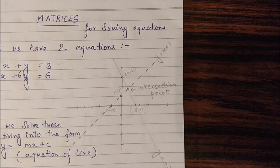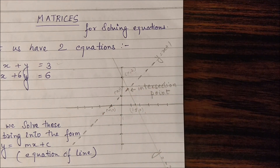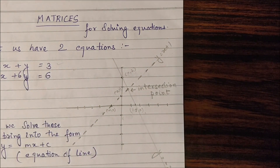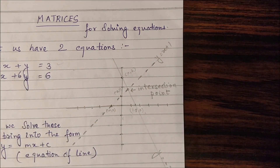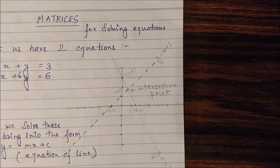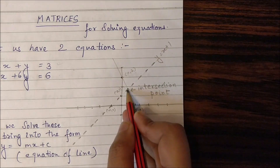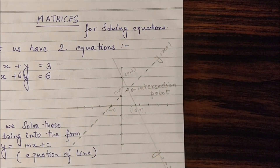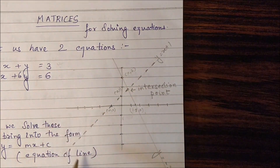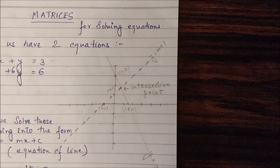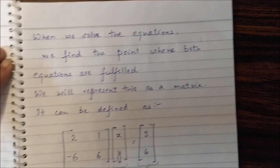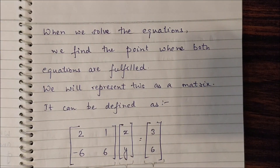When solving with matrices, we need this intersection point. For each equation individually, every value of x and y will satisfy that equation. But when solving both equations together, we get an intersection point that satisfies both equations simultaneously. This is the point we want to find.